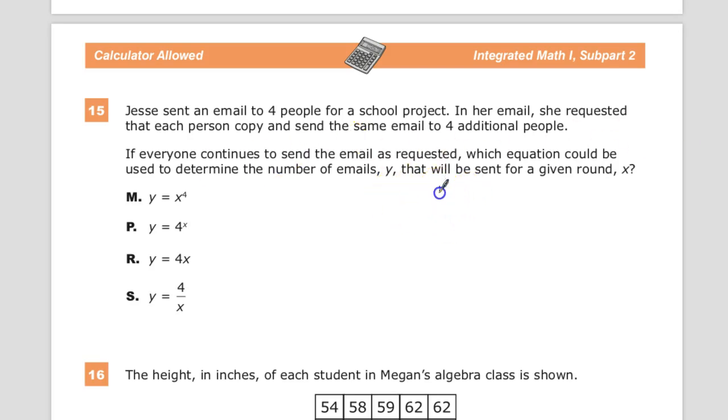So we're working with, here's Jesse. She's sending out her email. Sounds like a chain letter, doesn't it? And then each one of these people, so we'll call this person one, person two, person three, person four. So in the first iteration, we have four people.